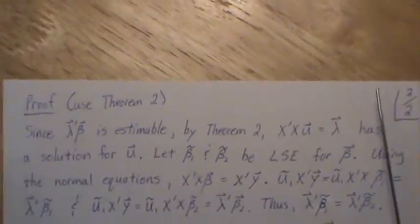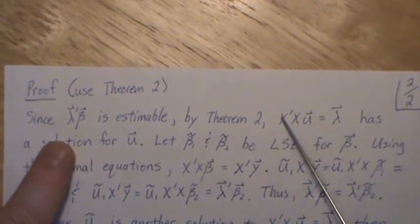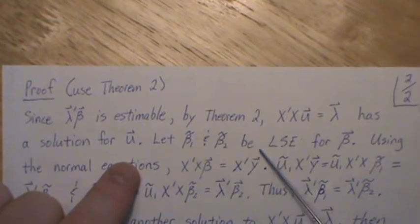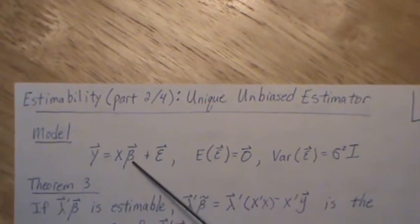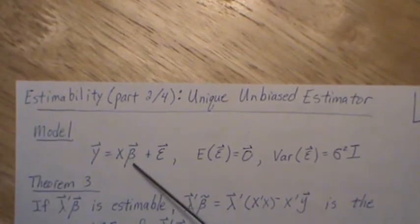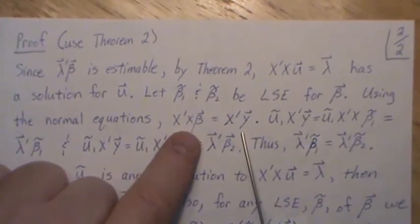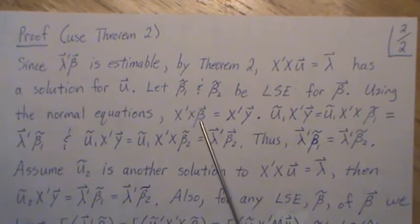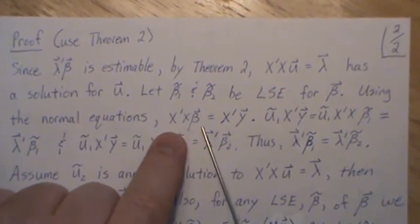Now let's use Theorem 2 to prove it again. Since this function is estimable, by Theorem 2 there's a solution u to the system of equations lambda prime equals u prime X-transpose X. Let beta 1 tilde and beta 2 tilde be any least squares estimates for beta using the normal equations. When you take derivatives of the squared errors and solve, you get the normal equations. The least squares estimate is the beta that solves this. If X-transpose X is full column rank we can take its inverse, but since it's not full column rank here, we use a generalized inverse.